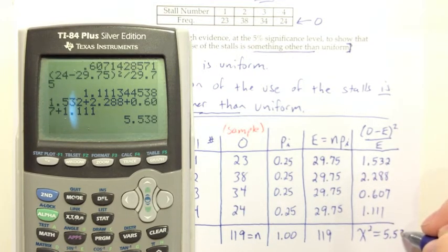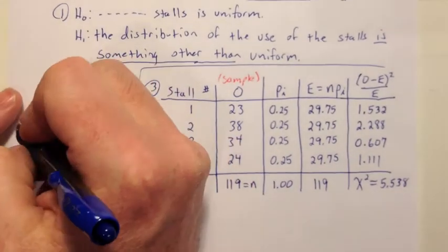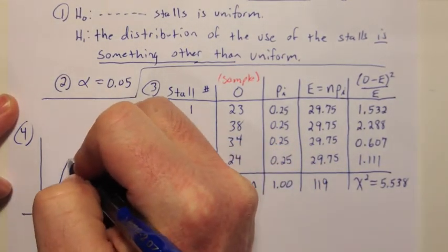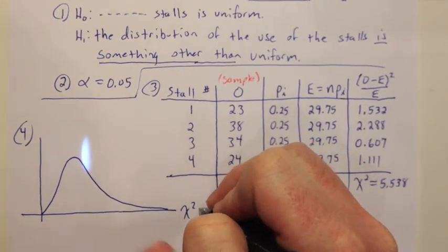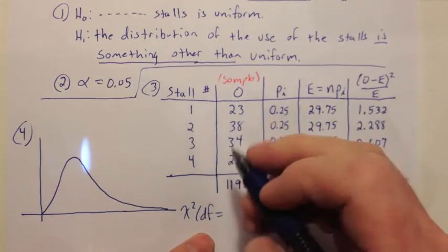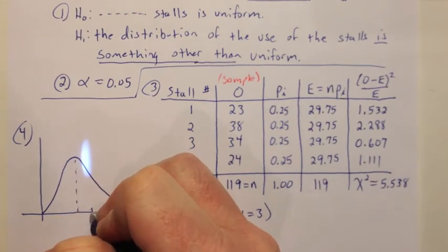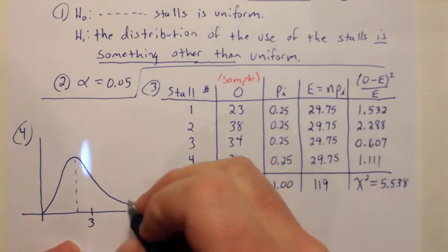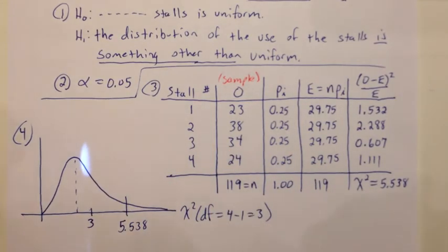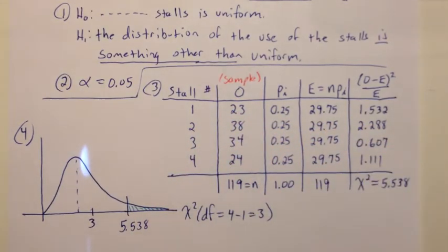So then once we get our test statistic, we get onto that question of is that enough evidence for us to be able to reject H0? And to really make that decision, we want to move on to our p-value. So I'll do that in step 4. I want to draw a right skewed shape when I'm doing a chi-squared distribution. And usually mention the df. Remember that the df is not n minus 1, but it's the number of categories minus 1. So 1, 2, 3, 4 categories minus 1. So we're going to have a df of 3. And that means if I drop down from the peak and move just a little bit to the right, that's my 3. And then 5 is past that, but not way past it. So 5.538. And then this area to the right is going to be our p-value. Remember that all of our chi-squared tests are right-tailed tests. And definitely true for goodness of fit.